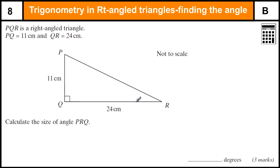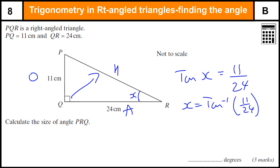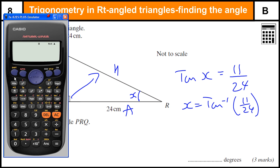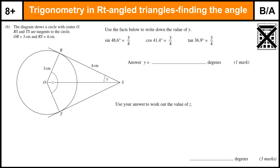Calculate the size of the angle PRQ — that's this angle here, I'm going to call it x. We've got our opposite side and the hypotenuse and the adjacent. Opposite over adjacent is tan, so tan of x equals 11 over 24, so x is tan to the minus 1 of 11 over 24. Bring the calculator in, shift tan, 11 over 24 — that gives us 24.6 degrees.